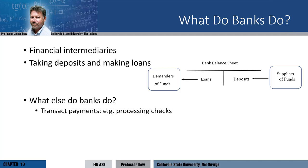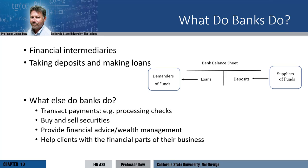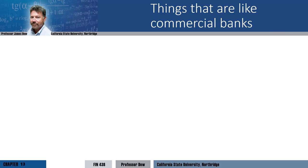What else do banks do? Banks are part of the transaction system — they process checks and provide access to cash. Banks can buy and sell securities. Banks can also provide financial advice and wealth management services to individuals, including not only deposits but other financial products such as mutual funds and insurance.